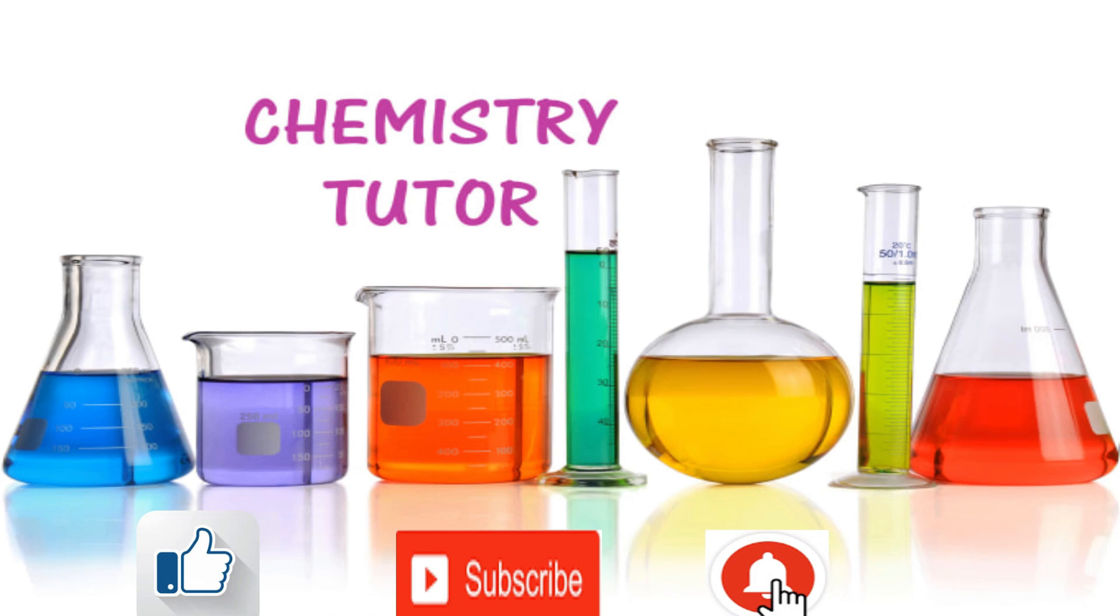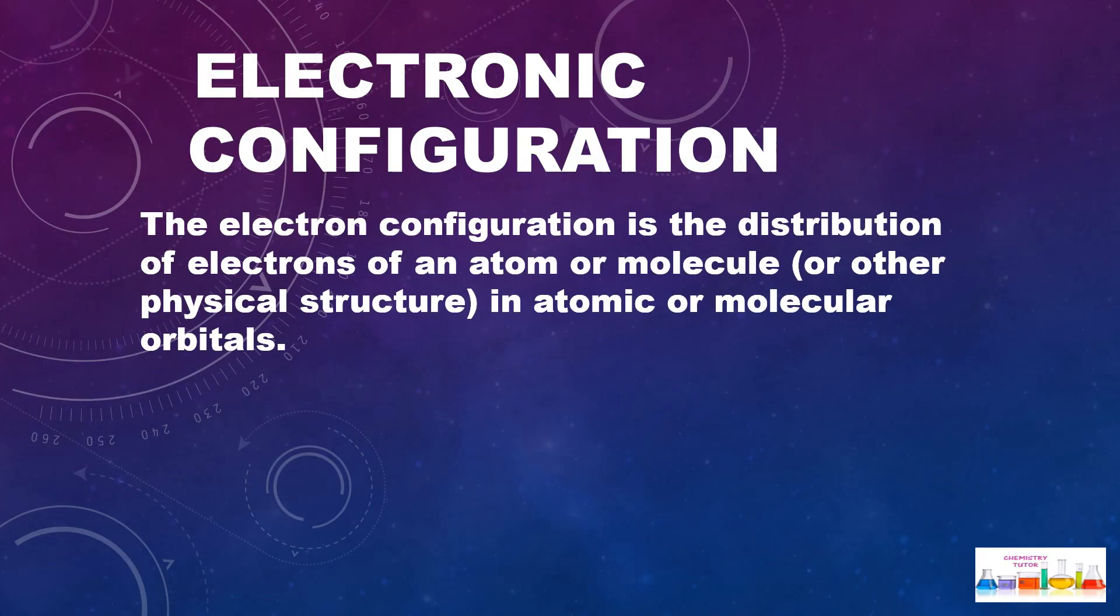Don't forget to share with friends. Electronic configuration: the electron configuration is the distribution of electrons of an atom or molecule or other physical structure in atomic or molecular orbitals.